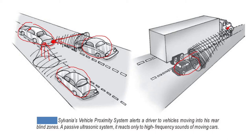If a vehicle in the blind zone is not seen, there should be a sensor which senses its sound and shows the driver that there is a vehicle in the blind zone which you are unable to see, and you have to check whether to give way or whether you have to move away from it.